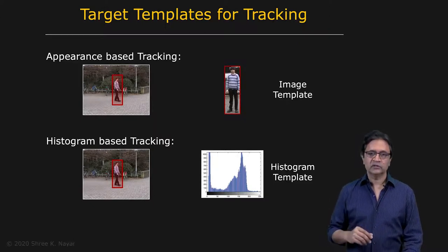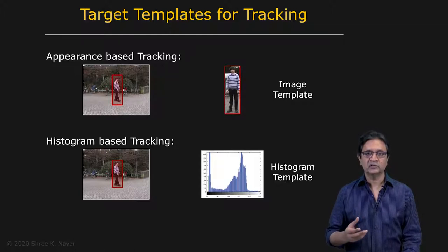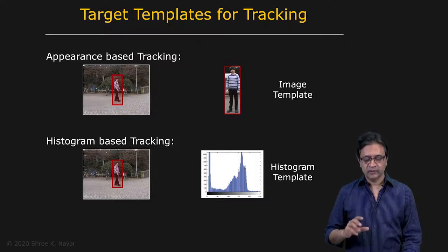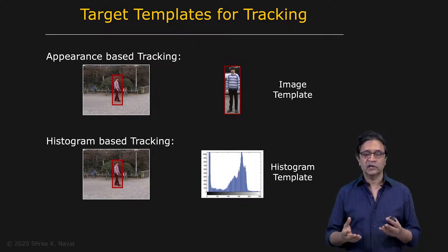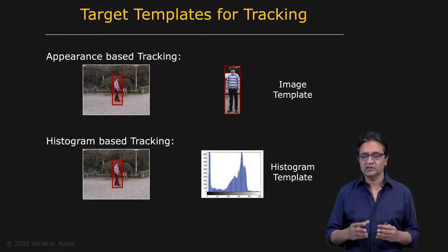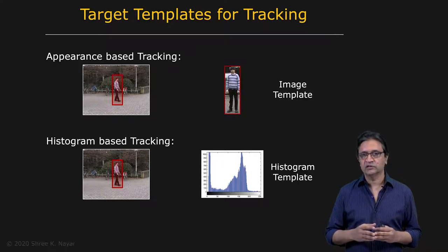Another way is to use a more abstract representation of appearance — not the direct image itself, but rather a histogram. In the case of a histogram, this is a little counterintuitive: you actually lose spatial information. But that can sometimes be useful because it makes the method more robust to some of the changes we want to be insensitive to, such as rotation and scale.